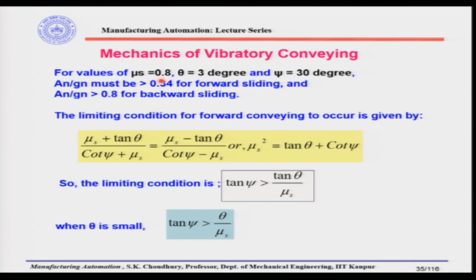For example, with μ = 0.8, inclination angle θ = 3 degrees, and vibration angle ψ = 30 degrees, we can rearrange the limiting condition for forward conveying. For small track inclination angles, tan(ψ) must be greater than the track inclination angle divided by the static coefficient of friction, where ψ is again the vibration angle. Knowing this inequality, we can find what the track inclination angle should be given μs and vibration angle, or find the required vibration angle. This is the advantage of deriving the mechanics of vibratory conveying.